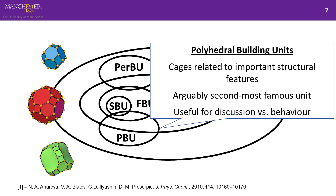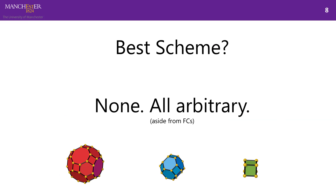Polyhedral building units are probably the second most famous type. Many of the cages shown are quite well-known — the sodalite cage, the beta cage, the alpha cage seen in zeolite A, and the faujasite cage seen in zeolite Y, zeolite X, and faujasite. However, there's no general method for breaking down structures into these units. The answer is none of them are suitable, because they all involve arbitrary decisions that cannot be algorithmized.